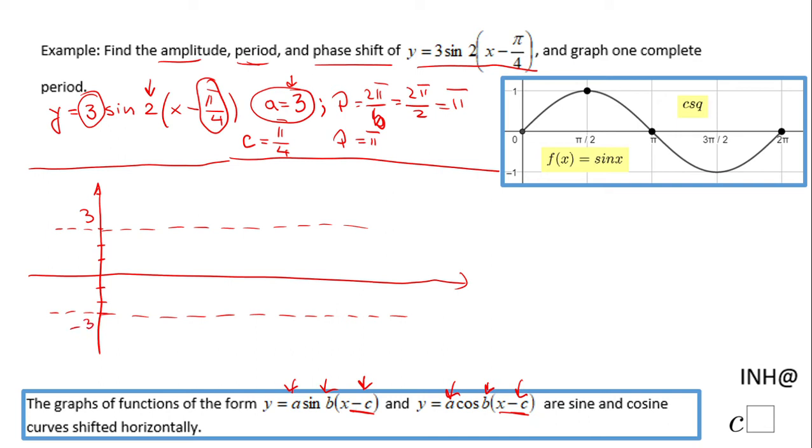Then I'll look at the phase shift of π/4. From the origin (0,0), which was the initial point for the parent graph f(x) = sin(x), I'm going to move π/4 to the right. That's going to be my first point in this cycle.